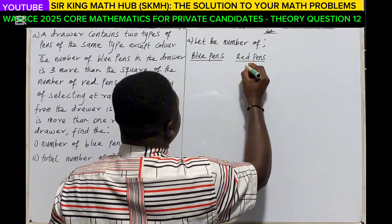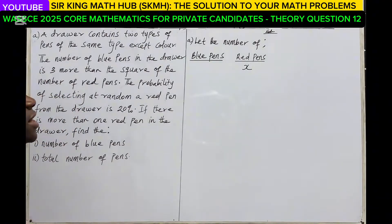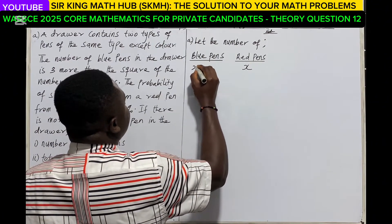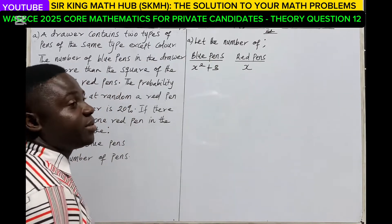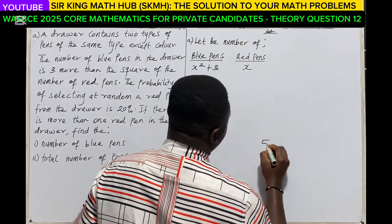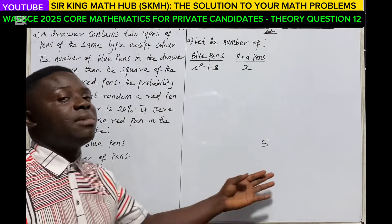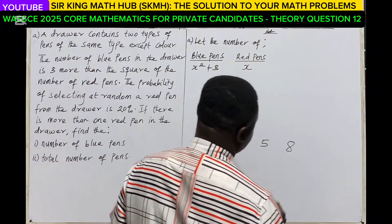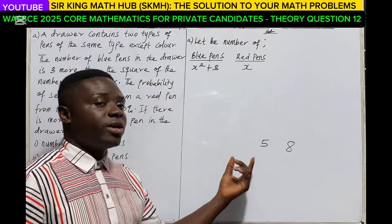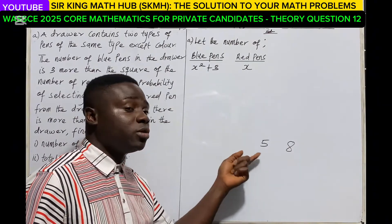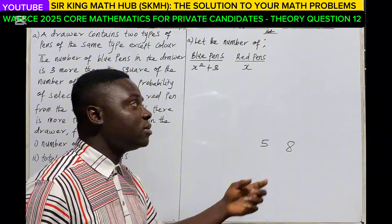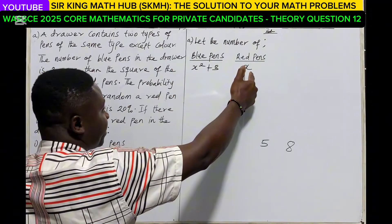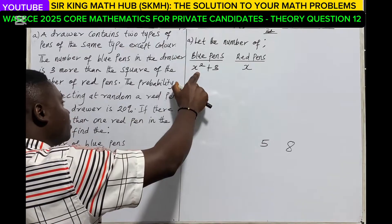If I represent the number of red pens as x, then how do I write three more than the square of the number of red pens? Let's see — if I have a number five and I ask you to write a number which is three more than five, the answer is eight, because five plus three equals eight. By the same logic, three more than the square of the number of red pens means x squared plus three.